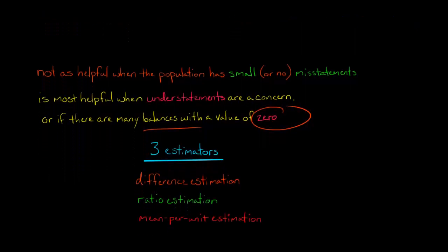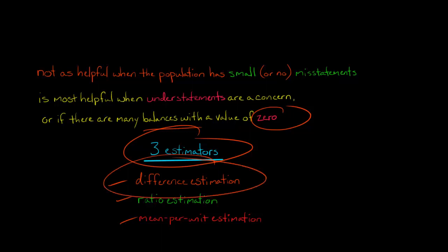With classical variable sampling, there are three different estimators you can use: difference estimation, ratio estimation, and mean per unit estimation. I'm going to make a video showing you how to do the calculations for each one of these.